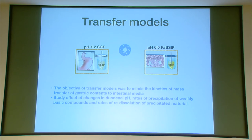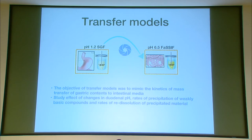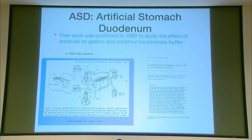If we understand the physiology and can imitate it — going from stomach to intestine — this transfer can be done in vitro. You can have a beaker with HCl and move the contents to another beaker at pH 6.8, representing stomach and intestine. In 1992, two physicians developed the first transfer model, the artificial stomach-duodenum model, to look at the effect of histamine-reducing agents on the solubility of freebase compounds.